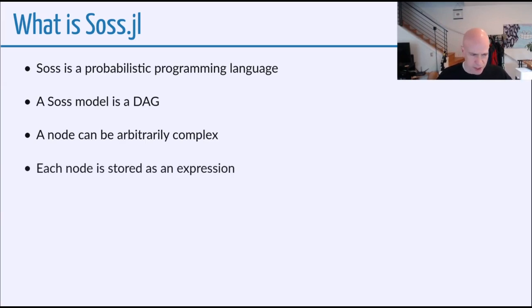Sauce is different in another way, which is that every node is stored as an expression. So when you do inference in Sauce, the code for the inference primitives, for example, the code that generates random values or evaluates a log density, that code is generated on demand.